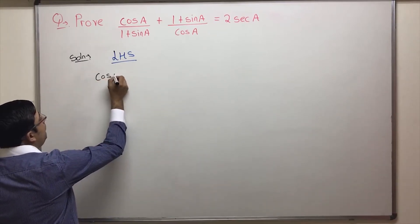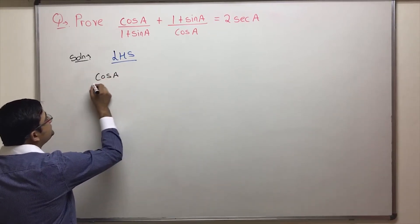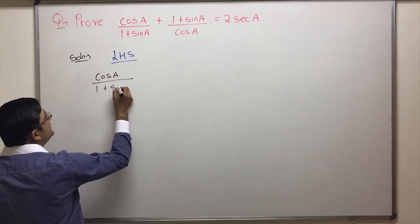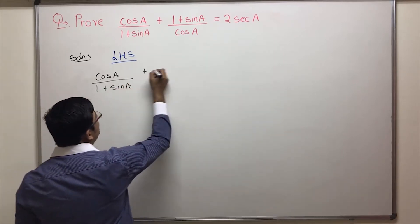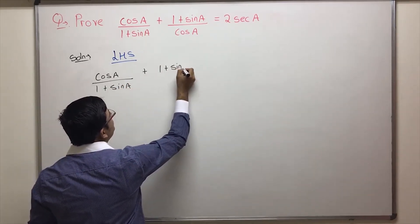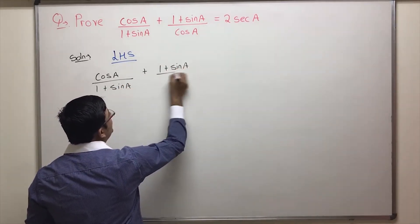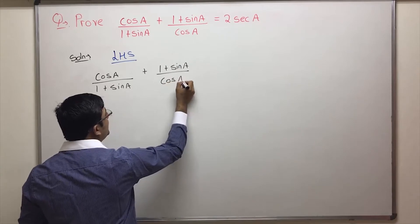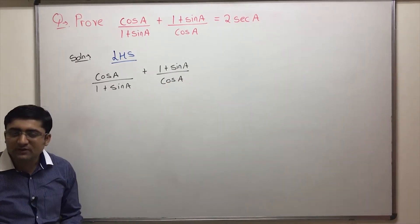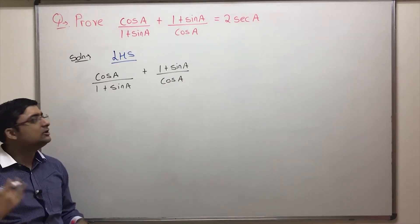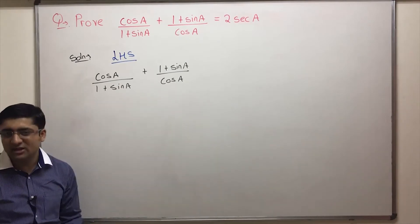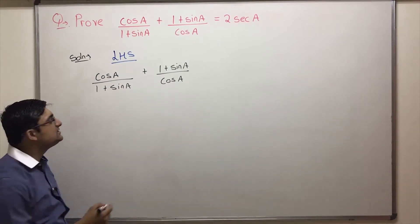We have cos A upon 1 plus sin A, plus 1 plus sin A by cos A. Is any trigonometric relation in square form? No. Next step: convert everything to sin and cos — it's already in sin and cos. So let's simplify.